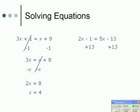If I add 13 to the right hand side I need to add 13 to the left hand side. And the plus and minus 13 will cancel, so I'm left with 2x add 12 equals 5x.